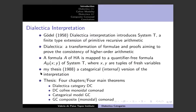So let's go to the dialectica itself. The plan of this talk is on top of each slide — four chapters: the dialectica, the first comonad, the GC, the second comonad, and conclusions. Gödel's dialectic interpretation is a very interesting thing, and Gödel was very perfectionist about it — when he died in 1976 or 1978, he was still working on better explaining what he wanted to do with it.